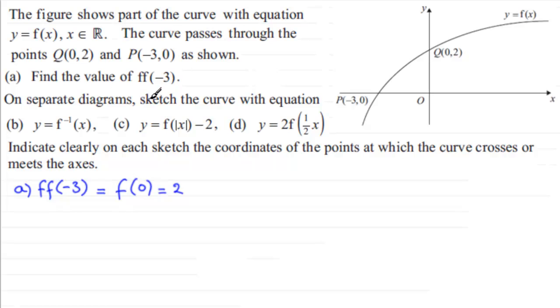Now in part b we've got to sketch then on separate diagrams the curve with equation y equals the inverse function of x. So we should be familiar with the fact that when you have an inverse function, what you get is a mirror image of your graph of f of x in the line y equals x. The line y equals x is a diagonal line. And so if we reflect the line that we've got here y equals f of x in the line y equals x, then the point Q at 0, 2 is going to go to a new point 2, 0.